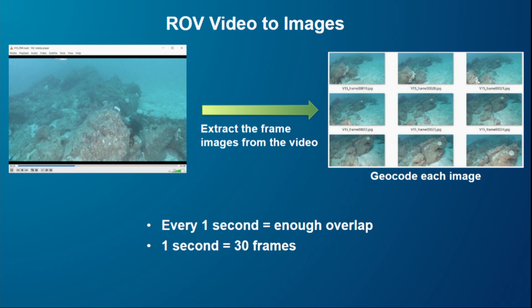The software extracts frame images from the video, since video is just a sequence of images creating motion. After extraction, it geocodes each image using the position data I provided. Through experimentation, I found that extracting one image per second gives enough overlap between frames. My video is 30 frames per second, so one second equals 30 frames. This will vary depending on your video — you have to check your own frame rates.